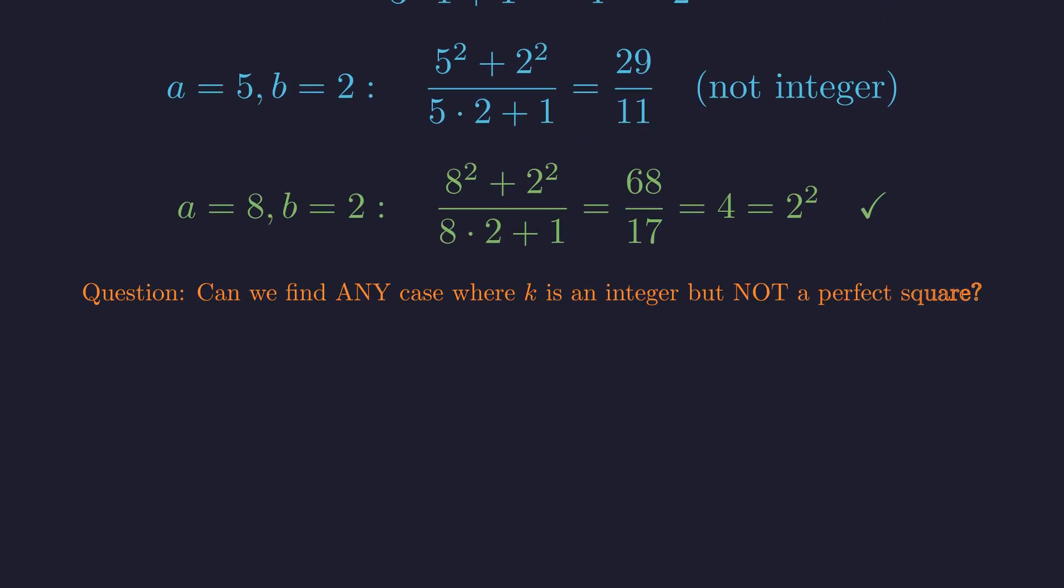This raises our central question. Can we find even one case where k is an integer but not a perfect square? Our proof will show this is impossible.